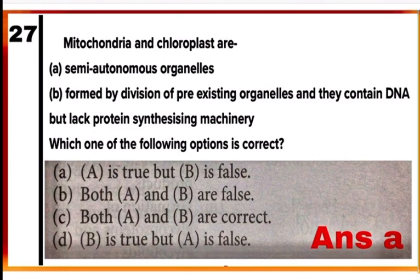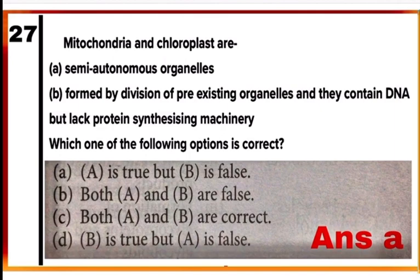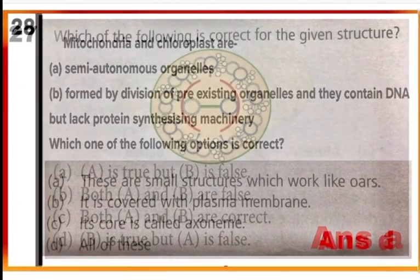Question 27: Mitochondria and chloroplasts are: A — semi-autonomous organelles, which is a true statement; B — formed by division of pre-existing organelles and they contain DNA but lack protein-synthesizing machinery, which is false. Both mitochondria and chloroplasts are semi-autonomous, have their own DNA, self-replicate, and have ribosomes so they can synthesize proteins. Mark A as correct — A is true but B is false.